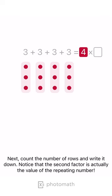Next, count the number of rows and write it down. Notice that the second factor is actually the value of the repeating number.